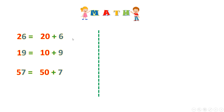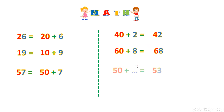Great job! Now if you want to know the number from the other side — if we have 40 plus 2, that's 4 tens and 2, it's 42. Now if we have 60 plus 8 — 60 is 6 tens — 6 tens and 8 is 68. If I have 50 plus what equals 53 — 50 is 5 tens in here, and here I have 3. So 50 plus what equals 53? Great! 3 is the missing number.